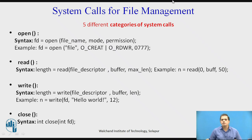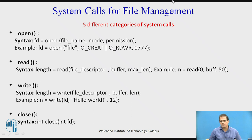The read system call is used to read the content from the file. It can also be used to read input from the keyboard by specifying the file descriptor. Syntax: length = read(fd, buffer, max_length). Example: m = read(0, buffer, 50). Here, file descriptor is the file descriptor of the file, buffer is where data is to be stored, max length is the maximum amount of data that can be read, and the return value is the number of bytes actually read. The write system call is used to write content to the file. Syntax: write(fd, "hello world", 12). Return value is the number of bytes actually written.